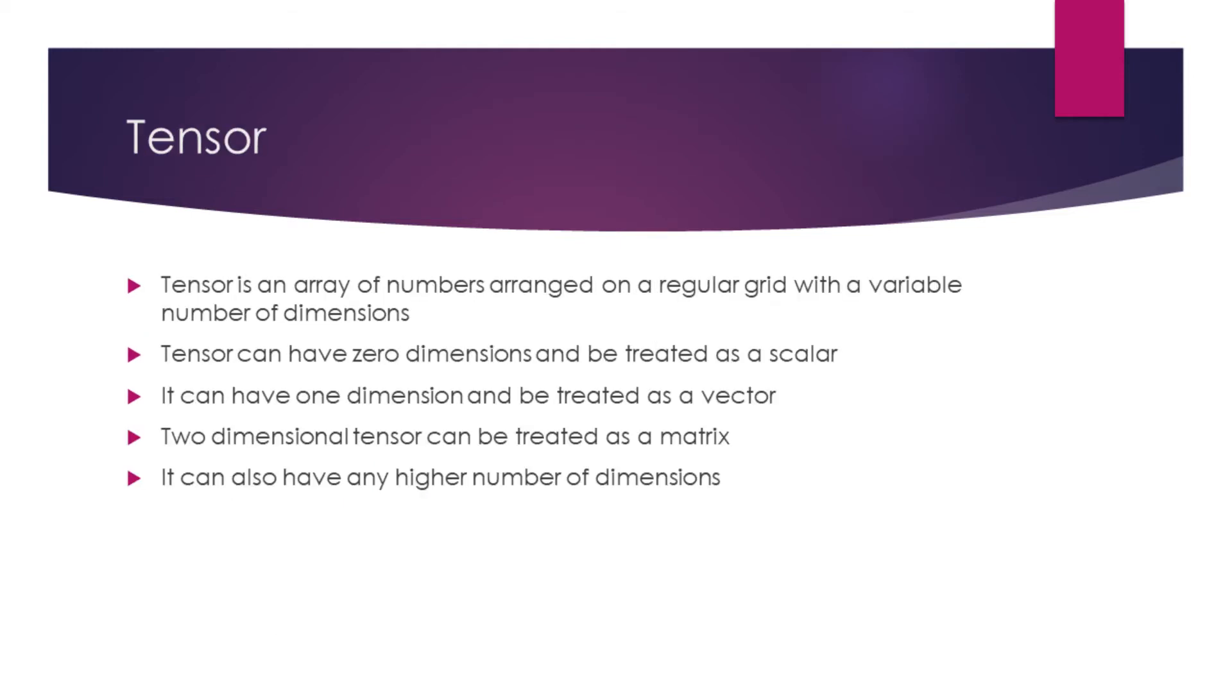Tensor is an array of numbers arranged on a regular grid with a variable number of dimensions. Tensor can have zero dimensions and be treated as a scalar. It can have one dimension and be treated as a vector. Two-dimensional tensor can be treated as a matrix. It can also have any higher number of dimensions.